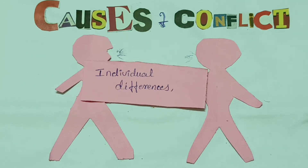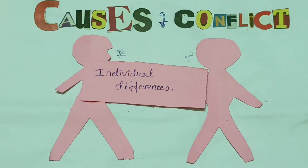To fulfill their individual interests, people fail to accommodate or adjust themselves with each other. Our thoughts are different, and sometimes our opinions are different from others. So individual differences are one of the reasons or causes for conflict.